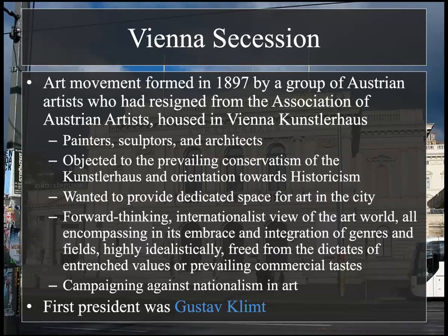This was an art movement formed in 1897 by a group of Austrian artists who had resigned from the Association of Austrian Artists, housed at the Vienna Kunstlerhaus. Painters, sculptors, and architects all did this, and they objected to the prevailing conservatism of the Kunstlerhaus and its orientation towards historicism. They wanted to provide in Vienna a dedicated space for art in the city. They were very much forward-thinking internationalists, embracing the integration of genres and fields, freed from the dictates of entrenched values and prevailing commercial tastes. They also campaigned against nationalism in art.